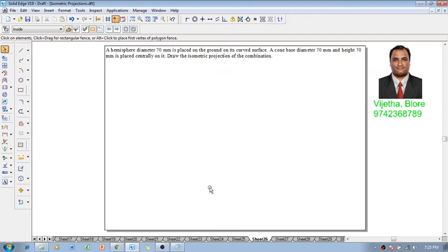Hi guys, greetings of the day. Myself Vijay Tawana, and I'm going to show you the solution on isometric projection. An example is like this: a hemisphere with diameter of 70 mm is placed on a flat surface. A cone with base diameter of 70 mm and height of 70 mm is placed centrally on it. Draw the isometric projection of the combination.